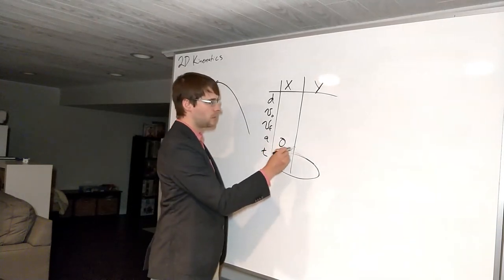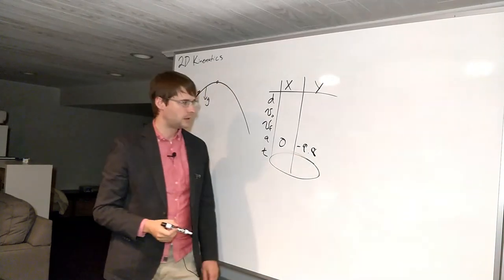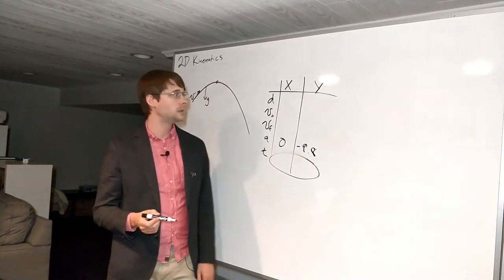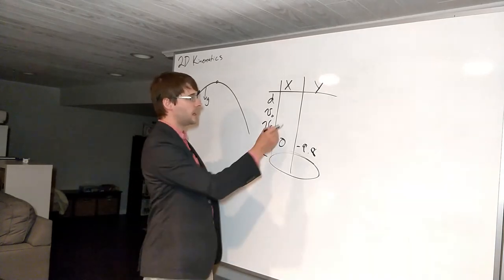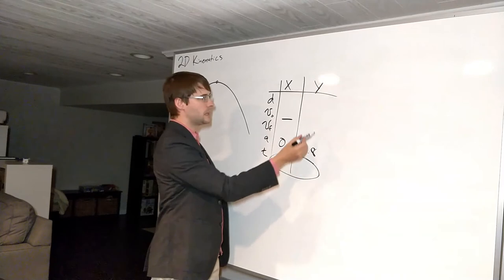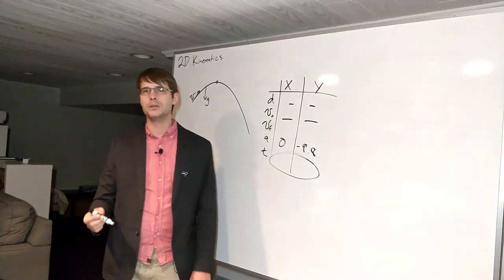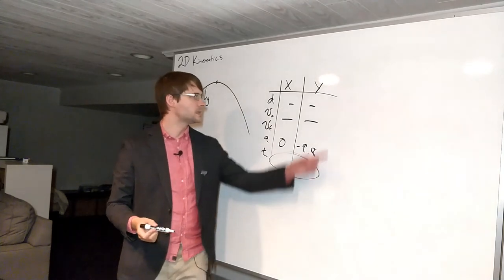So these are the important things to remember here is that the accelerations are always this when you're doing a projectile. Otherwise, you can find whatever the initial velocity and the final velocity in this direction are to be the same. If you know the initial velocity and some of these displacements, you can go ahead and do the rest.